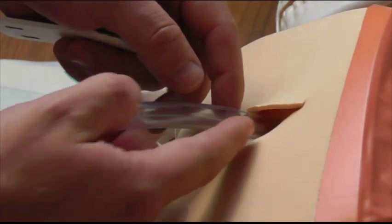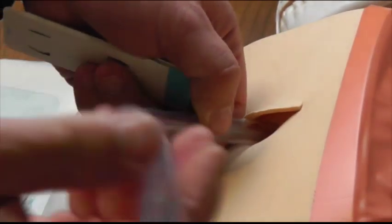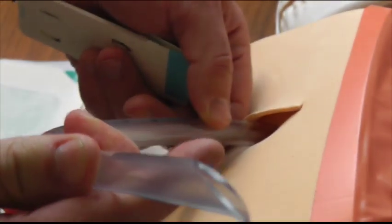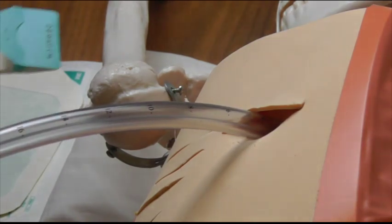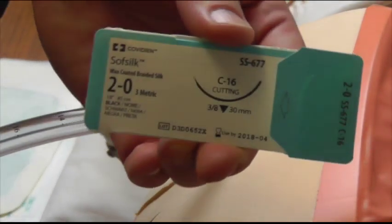You've got your tube in the patient, it's up to a lot of depth, all the holes are in the patient, you've connected the end up to your drain, you know it's swinging and bubbling. The first thing you're going to need is some sort of thick suture material.